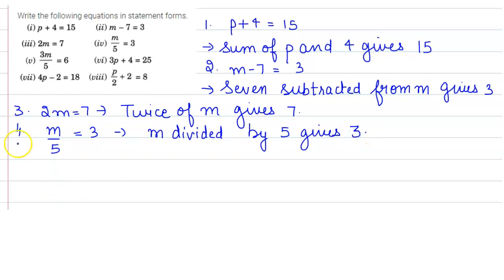Moving towards the next part, we have in fifth part 3M upon 5 is equals to 6. So this can be written as 3 times M divided by 5 gives 6.